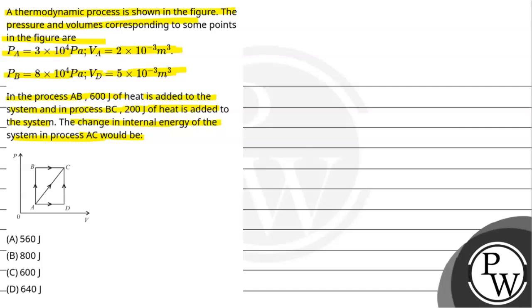Heat is added to the system in both processes. The AB process has 600 J, and the BC process has 200 J. For the AC process, we have to find the change in internal energy. Let's start with the solution.